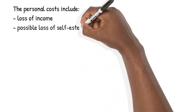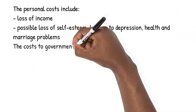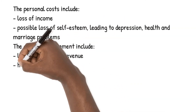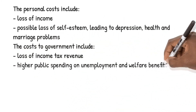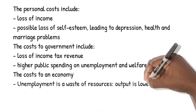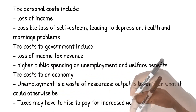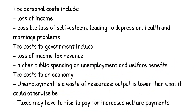What are the costs of unemployment? These can be broken down into general categories. The personal costs include loss of income, possible loss of self-esteem leading to depression, and health and marriage problems. The costs to government include loss of income tax revenue and higher public spending on unemployment and welfare benefits. The cost to an economy is that unemployment is a waste of resources — output is lower than it could otherwise be, and taxes may have to rise to pay for increased welfare payments.